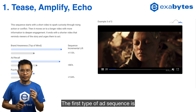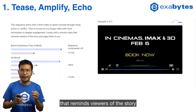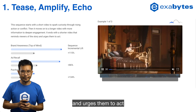The first type of ad sequencing is the Tease Amplified Echo. This sequence starts with a short video to spark curiosity through rising action or conflict. Then it moves on to a longer video with more information to deepen the engagement. It ends with a shorter video that reminds viewers of the story and urges them to act.